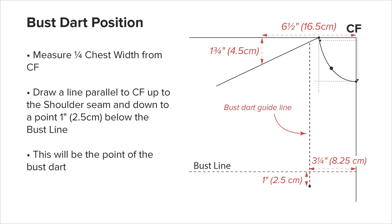The bust dart position: measure out from the center front a quarter chest width and draw a guideline parallel to center front up to meet the shoulder seam and down to 1 inch or 2.5 centimeters below the bust line. This would be the point of the bust dart.